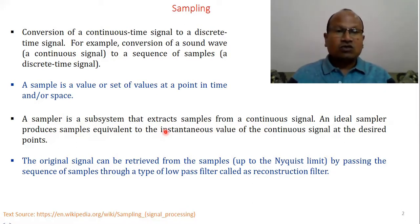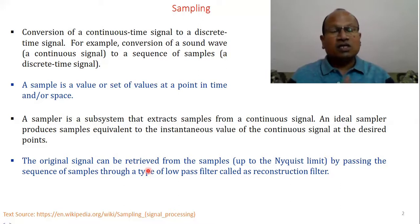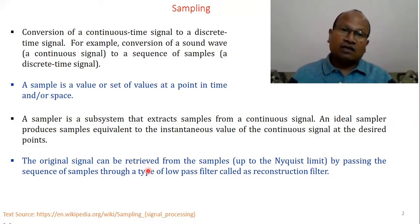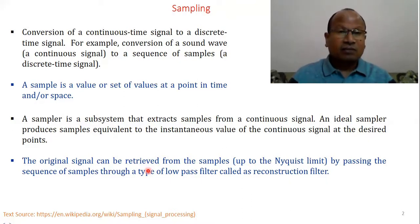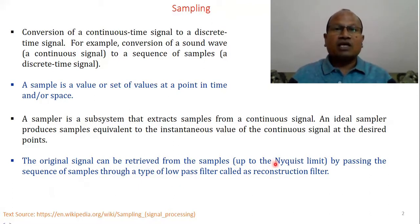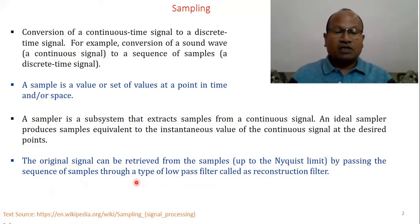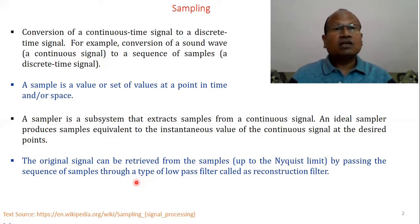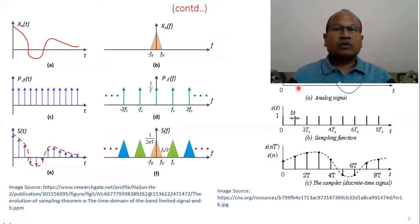Practically, ideal sampling does not happen. The original signal, once sampled and converted into digital, needs to be converted back into analog — for example, in communication we want the audio signal back. So it has to be reversed. The original signal can be retrieved from the samples using the Nyquist theorem by passing the sequence of samples through a low-pass filter, also called a reconstruction filter.